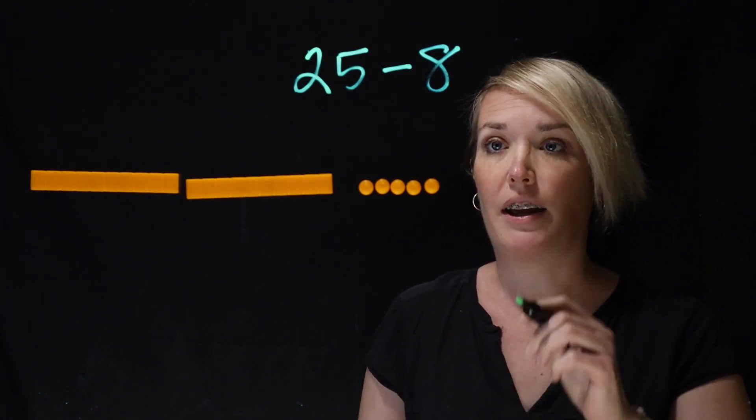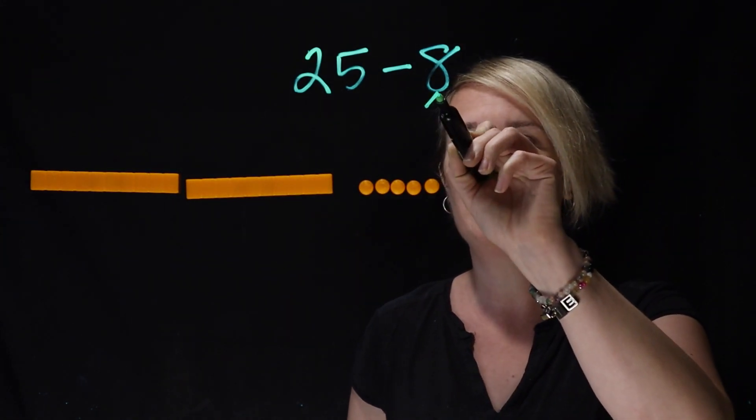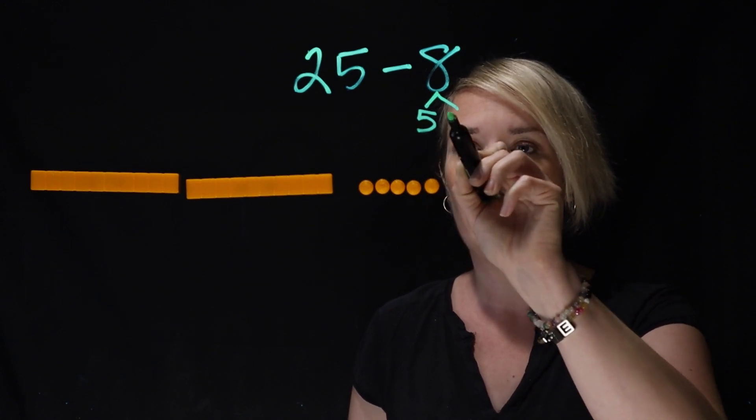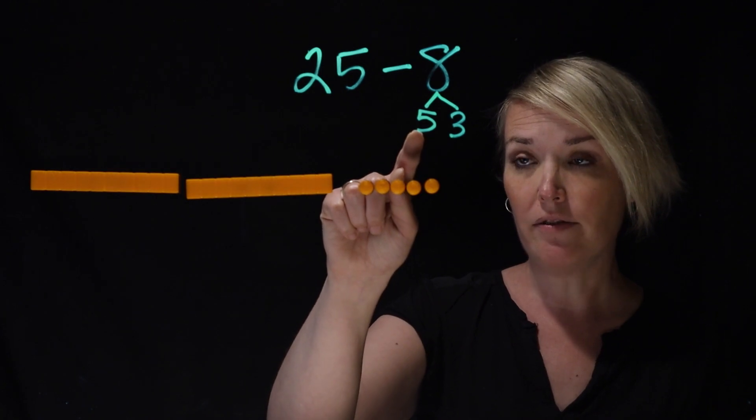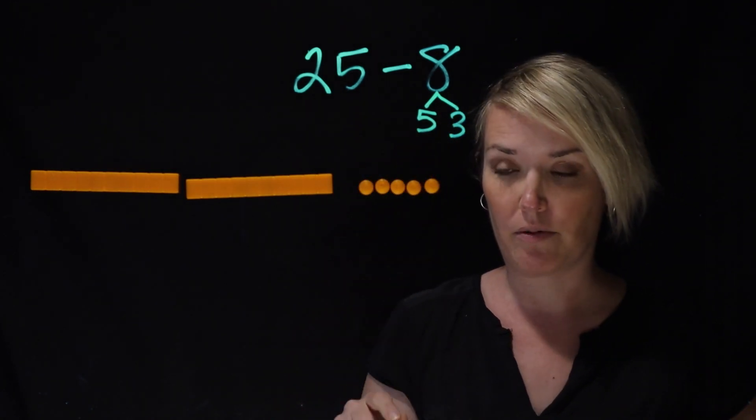All right, so here's the idea that Azzy shared with me. She said, I'm going to split this into 5 and 3. So she's going to do 25 minus 5, and then whatever she gets, she's going to then minus 3.